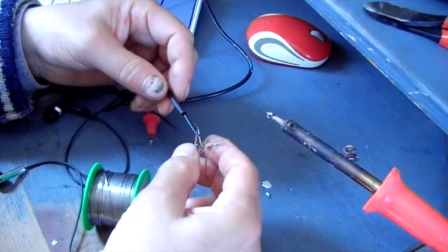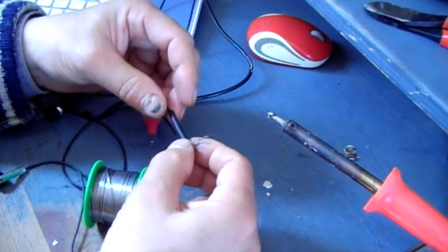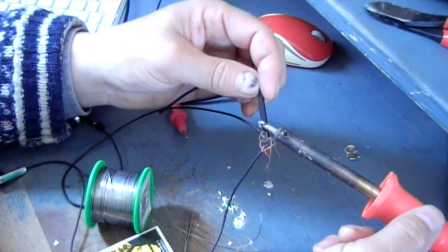Now once those have all been soldered up, I start to insulate each set of wires separately using the shrink wrap.